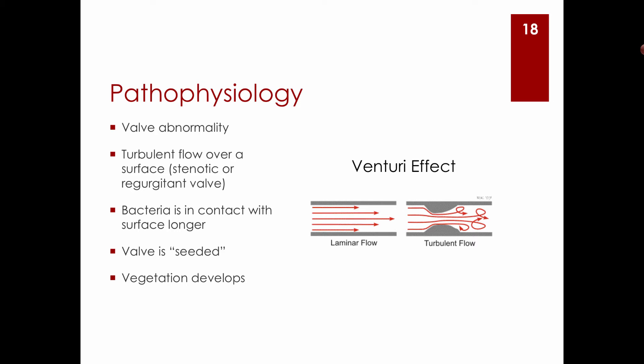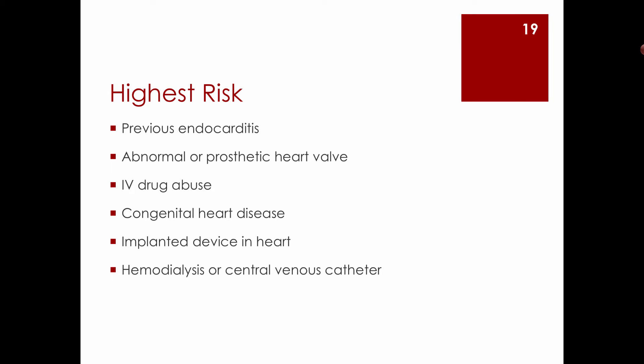Valves don't just get infected on their own — there must be a pre-existing abnormality. That abnormality causes turbulent rather than laminar flow. As blood flows across the irregular valve lesion, it becomes turbulent and recirculates, giving bacteria more time in contact with the valve surface. With bacteria in the bloodstream, there's more opportunity for them to stick and cause infection.